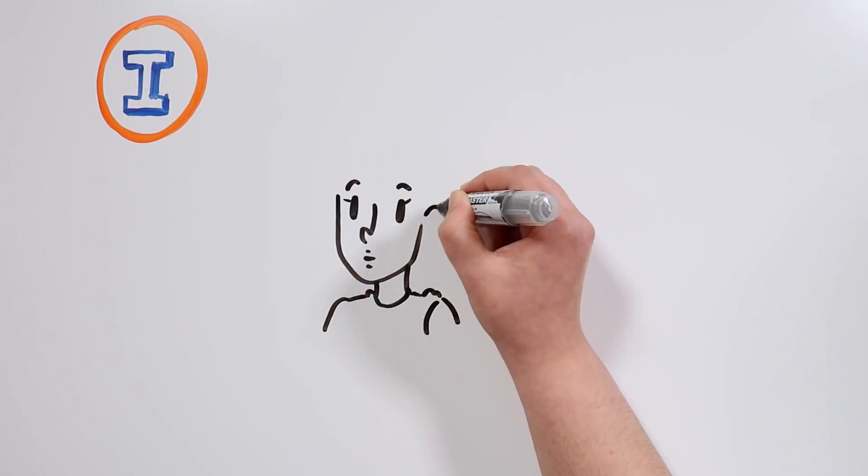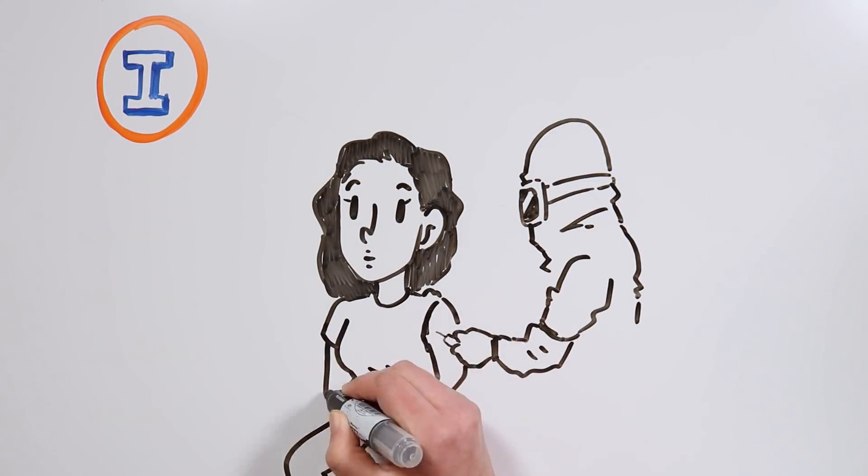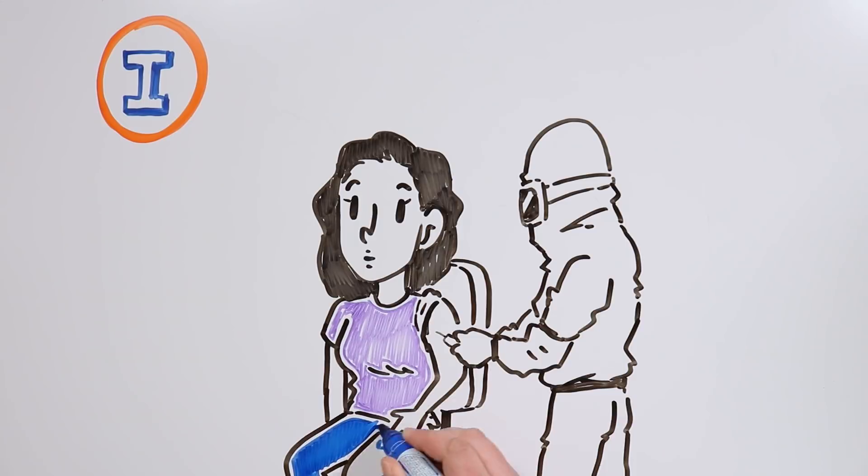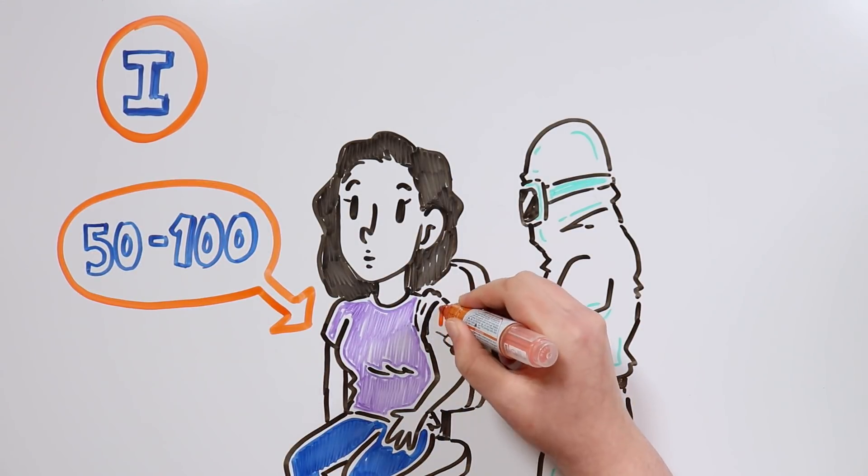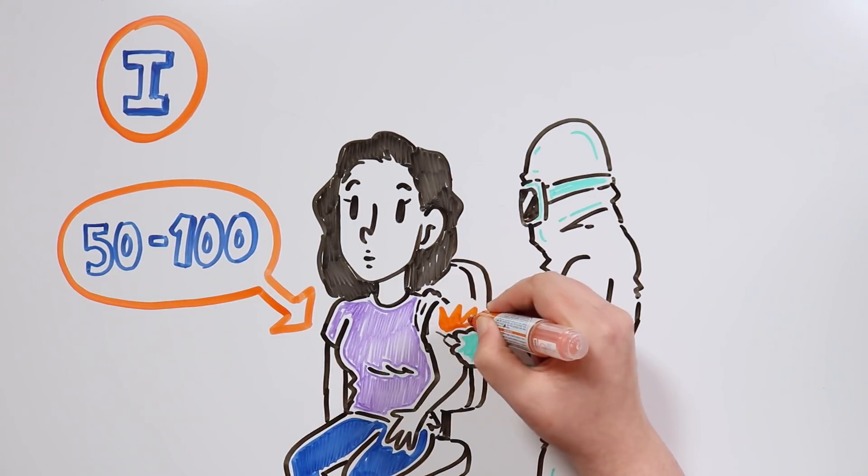In phase 1, the vaccine is administered to a group between 10 to 50 volunteers of legal age who are not infected. The goal in this phase is to verify if the vaccine is safe or not.